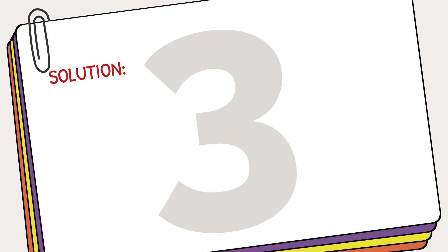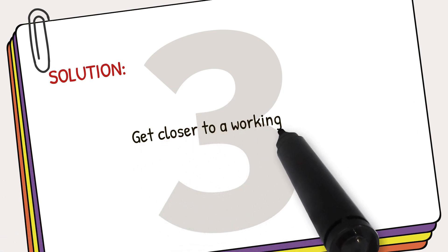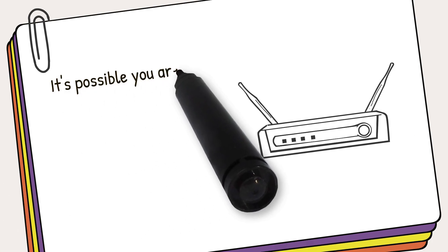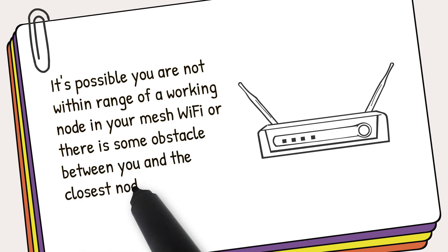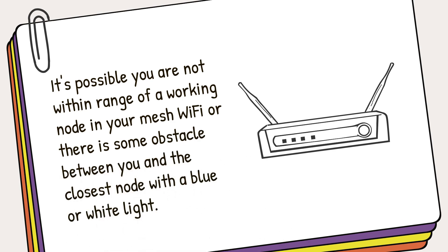Solution number 3. Get closer to a working node. It's possible you are not within range of a working node in your mesh Wi-Fi or there is some obstacle between you and the closest node with a blue or white light.